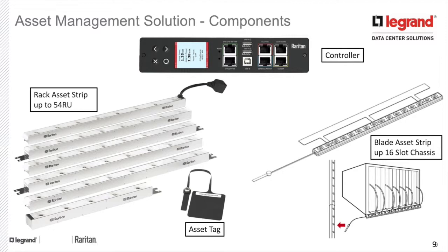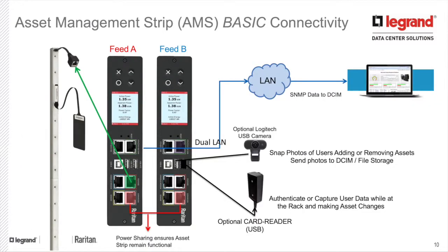The asset solution is made up of several different components. On the left, we have the asset strip, which connects together. On the right, we have a blade chassis strip for managing up to 16 slots in a single blade chassis. At the bottom, we have the asset tag itself, which physically attaches to your asset. At the top, we have the controller that gives you the network interface to this asset information.